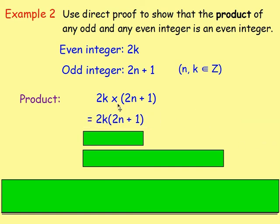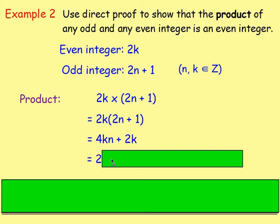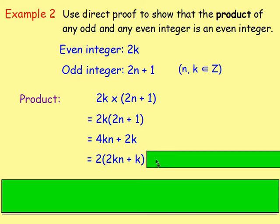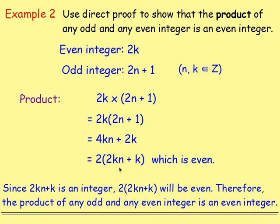The product means we multiply them together. So we're going to have 2K bracket 2N plus 1. Multiplying out the brackets: 2 times 2 is 4, multiplied by K and by N, giving 4KN plus 2K times 1 which is 2K. We want to prove that product is an even integer, and when it's even it can be written as 2 times something. So we take out 2 as a common factor, leaving us with 2 times the bracket 2KN plus K. Since 2KN plus K is an integer, doubling it gives something even. So 2 bracket 2KN plus K must be even. Therefore the product of any odd and any even integer is an even integer.